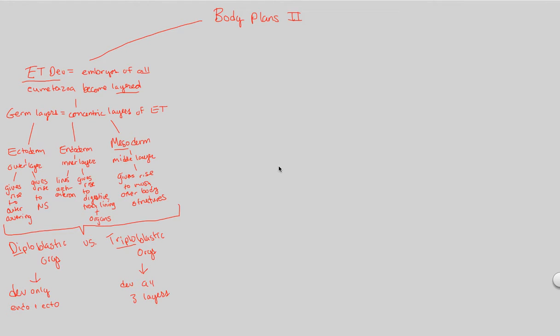So now to pick up right where we left off, we have completed the idea of embryonic tissue development being a big step in the overall development of the body plan that an animal will have. Either they will be diploblastic or triploblastic, depending on their orientation of ectoderm, endoderm, and mesoderm, respectively.